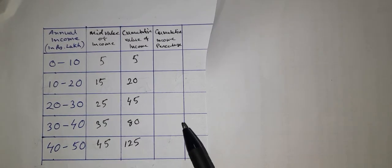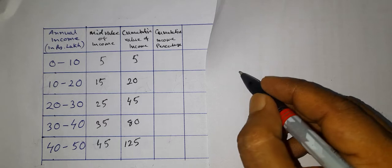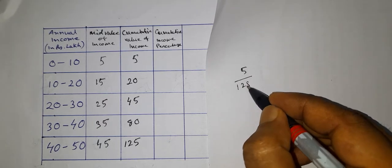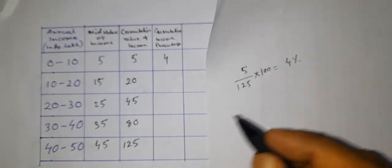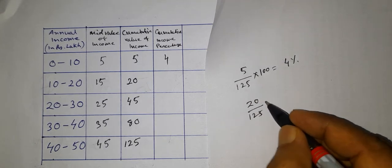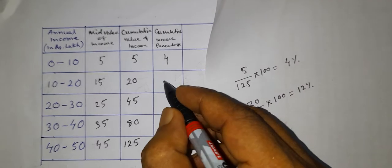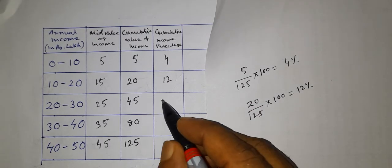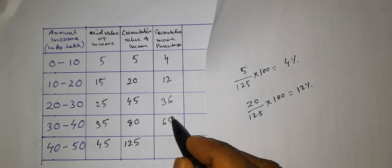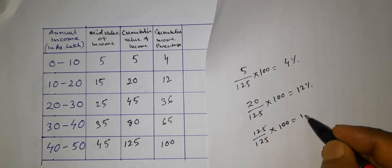Now we calculate the cumulative income percentage. 5 out of 125 multiplied by 100 equals 4%. Then 20 out of 125 multiplied by 100 equals 12%. Then 45 out of 125 is 36%, then 80 out of 125 is 65%, and the last is 100%, since 125 divided by 125 multiplied by 100 is 100%.